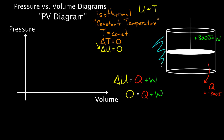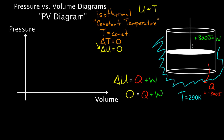Constant temperature with what? Just stick the whole thing in a thermal reservoir. Put the container in a large tank of water at, say, 290 Kelvin. Water doesn't change its temperature easily since it has such a high specific heat, so a very large tank will maintain the same temperature and not be affected by a little piston. The gas in the piston tries to maintain equilibrium with the water's temperature, ensuring an isothermal process.